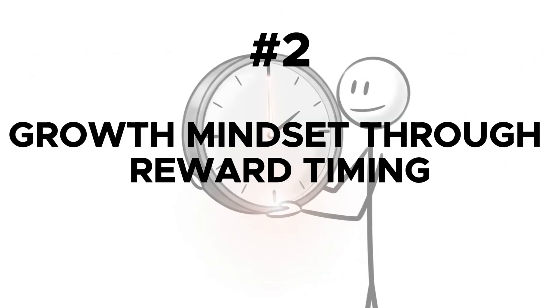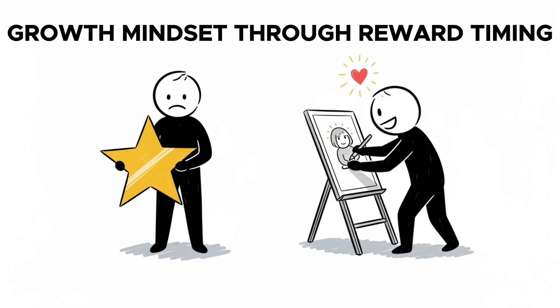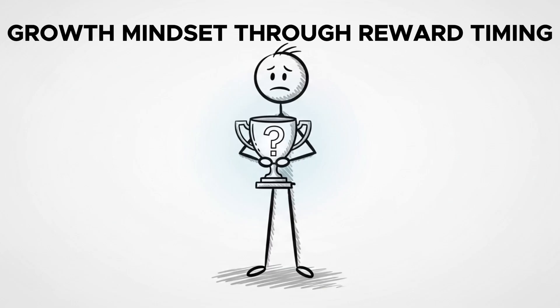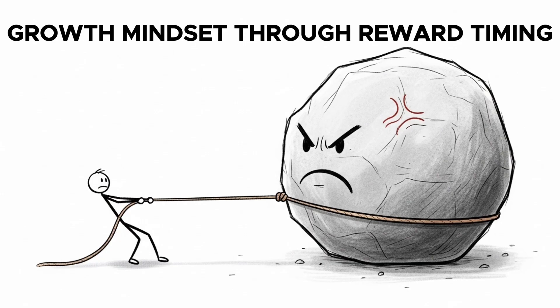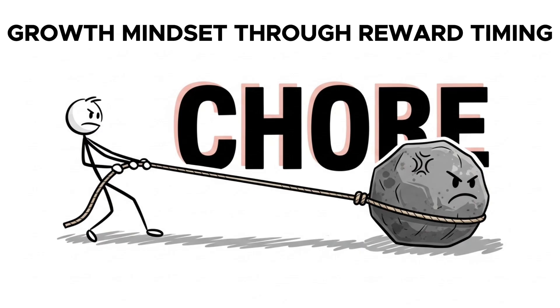Number two, growth mindset through reward timing. In a Stanford study, kids who intrinsically loved drawing lost interest when they were extrinsically rewarded with gold stars. This shows us that dopamine isn't just a reward for success, it is a marker for what your brain pays attention to. When you only reward the final outcome, your brain dissociates the painful effort from the ultimate pleasure, making hard work feel unrewarding and a chore.